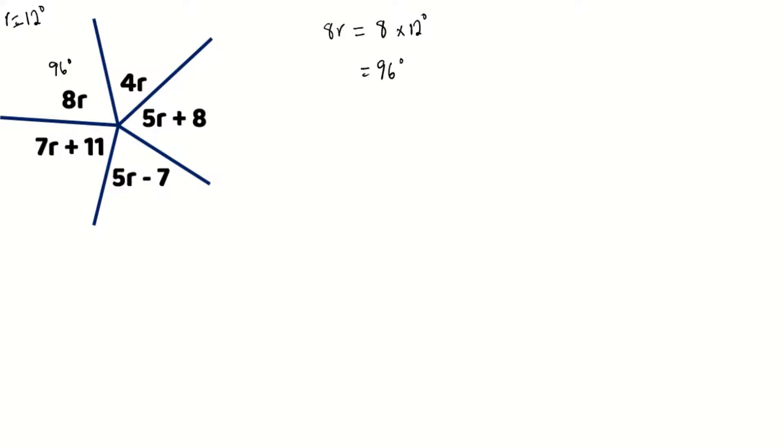Next we're going to calculate our 4r. And 4r also means that 4 is being multiplied to 12 degrees. And 4 times 12 will give us 48 degrees. So my 4r is 48 degrees.